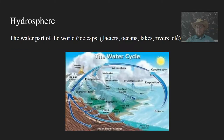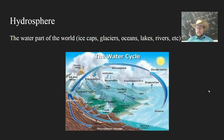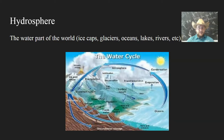Then we also have the hydrosphere. That is the water part of the world, and it includes the icy part of the world — ice caps and glaciers — but also the liquid parts such as the oceans, rivers, and streams. Even the water vapor that's in the atmosphere can technically be considered part of the hydrosphere. The hydrosphere is also very important because it supports life on this planet, it changes the geosphere, and interacts with the atmosphere.